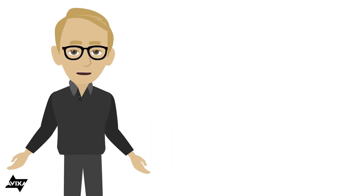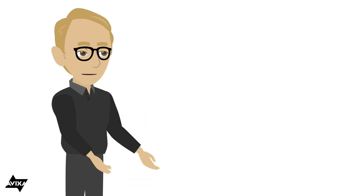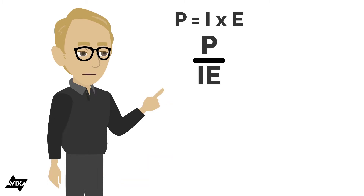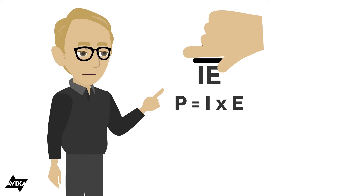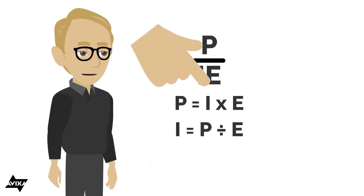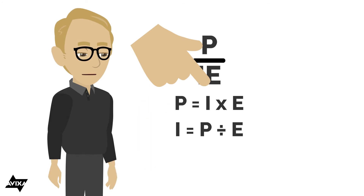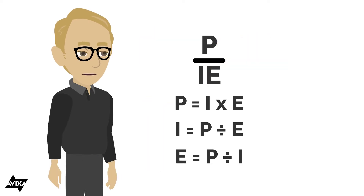We can also do something similar with power as it relates to Ohm's Law — sometimes we know this as easy as pie. P equals I times E. We write this out as P-I-E. If I want to solve for power, put my finger over the P — I times E, easy as pie. If I want to solve for current, that's power divided by voltage. If I want to solve for voltage, that's power divided by current.